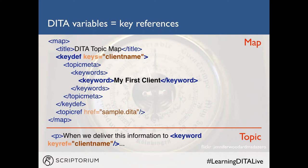You can have a single topic with a keyref and multiple map files with different key definitions that result in different outputs. For example, in another map you might define the key for 'client name' as 'My Second Client.' If you publish that map, all the keyrefs referencing client name will display 'My Second Client.' So if you need to deliver a document to a first client, you reference that topic in the first map; for a second client, you use the second map. All of your different key definitions are in their respective maps and you just generate the output for the specific audience.